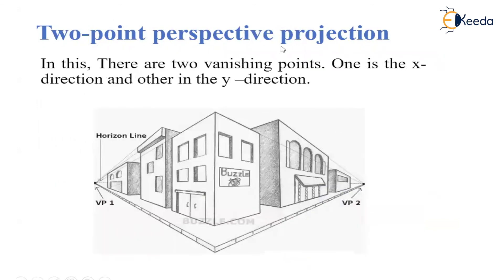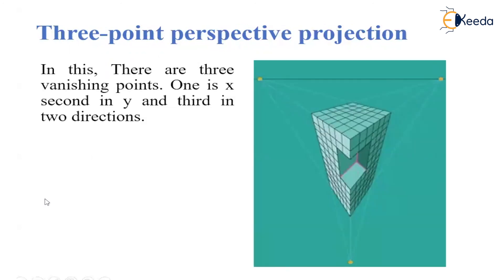In two-point perspective projection, there are two different vanishing points. We can view the object from two different sides — this is a two-point perspective projection.